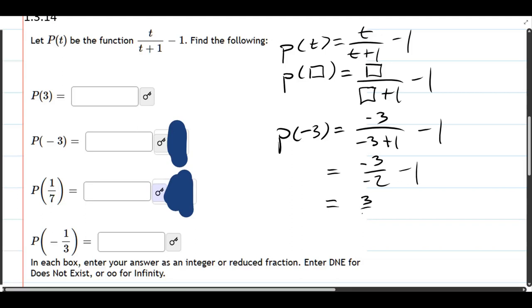Negative over negative is positive, so that's positive 3 halves. Now we want to turn it into a single number so I'm going to multiply 1 by 2 over 2. So we have 3 halves minus 2 halves which is 1 half, and that will go right there: 1 half.